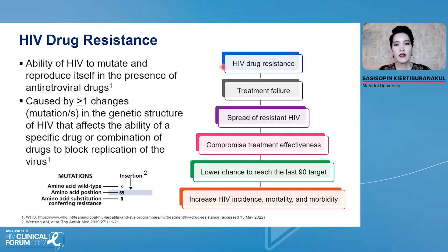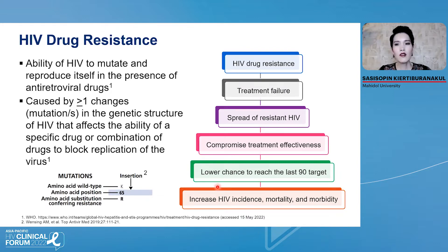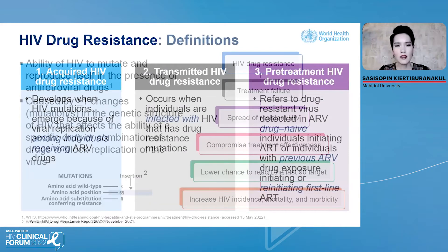HIV drug resistance is one of the most important causes of treatment failure. It can spread drug-resistant HIV and can compromise treatment effectiveness, lower the chance of achieving the 90-90-90 or 95-95-95 targets, and finally it increases HIV-related mortality and morbidity. The WHO proposed three definitions of HIV drug resistance.